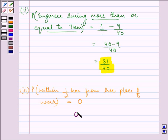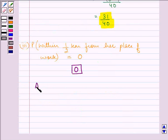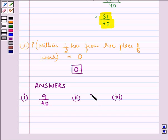Our final answer is 9 by 40 for the first part. Second part's answer was 31 by 40 and the answer to the third and final part was 0 since every person is living at least 1 km or far from their places.